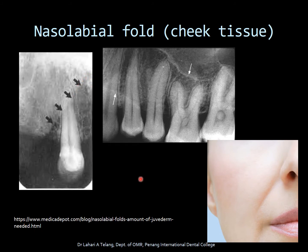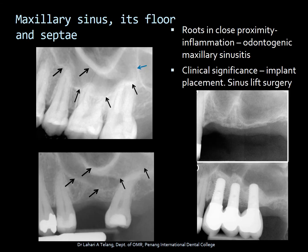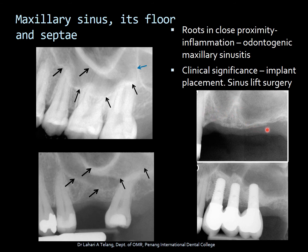The nasolabial fold is the fold on the cheek that is visible, and cheek tissue gives the appearance of a soft tissue radiopaque shadow on maxillary radiographs, especially in the canine-premolar region. Moving on to the maxillary sinus — an important landmark. In the maxillary posterior region, the roots of the premolars and molars are in close proximity to the sinus floor. Occasionally, odontogenic infection in the maxillary molar roots, especially the palatal root, can inflame the sinus floor and lead to odontogenic maxillary sinusitis. In an edentulous area, the sinus floor generally dips lower, which is of important clinical significance when placing an implant.